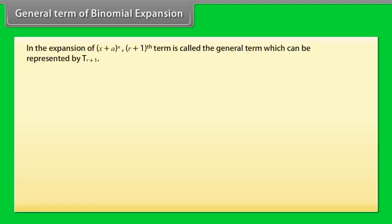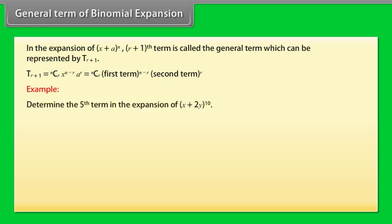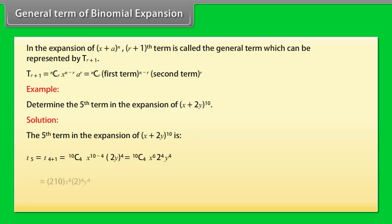General term of binomial expansion: In the expansion of (x + a)^n, the (r+1)th term is called the general term, represented by T(r+1). T(r+1) = nCr · x^(n−r) · a^r = nCr · (first term)^(n−r) · (second term)^r. Example: Determine the 5th term in the expansion of (x + 2y)^10. The result is 3360 · x^6 · y^4.